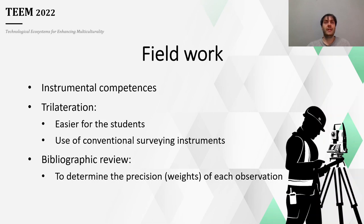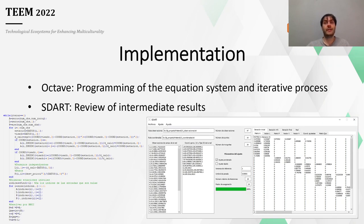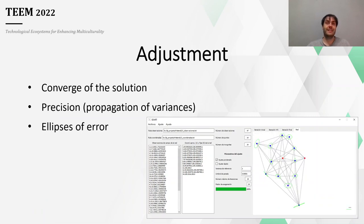In addition, they will have to determine properly the precision of each observation to set correctly the weight of the adjustment. As stated previously, the student will program the solution from zero in Octave, with a syntax very similar to MATLAB. To check the partial results of the coding, the student will use SDAR to verify them and, if necessary, correct programming errors and therefore reduce their frustration. As part of the adjustment solution, the student will determine the precision of the final coordinates of the network and the error ellipses. This statistical analysis involves large matrices, so the support of SDAR software plays a key role in this step.